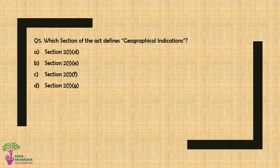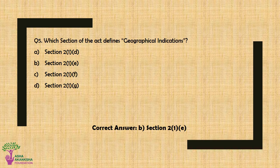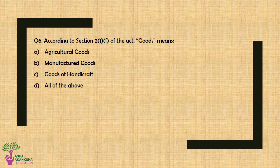Question No. 5: Which section of the act defines geographical indications? Option A: Section 21B, Option B: Section 21E, Option C: Section 21F, or Option D: Section 21G. The correct answer is Option B — Section 21E.